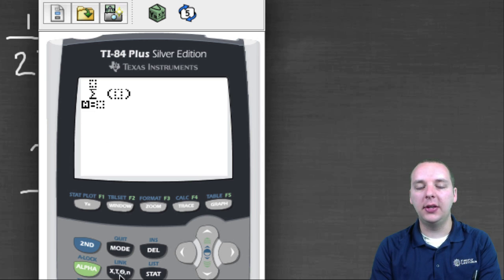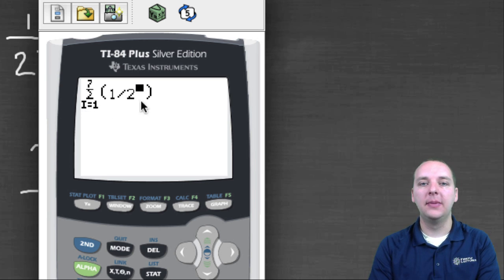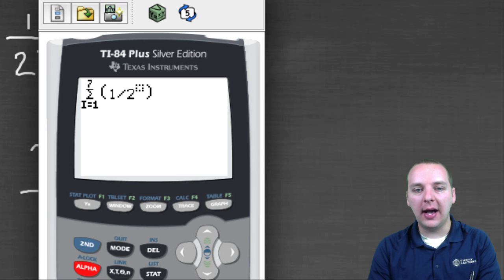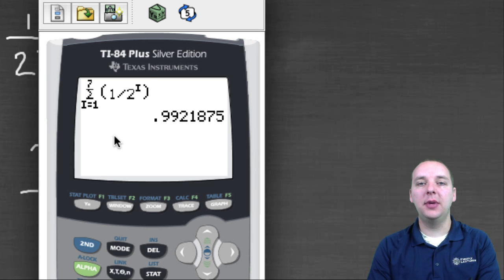So you see it wants a letter here. We'll just use I for example. You don't have to use an I, but we will. We'll say I equals one to seven, let's say we want to add up the first seven terms of one divided by two raised to the Ith power. So you have to go back and put in that letter, the same letter that you used before in your exponent. So we'll go alpha I, and you have to use alpha to make sure that you're getting the letter, not something else. So this is identical to what I had on my previous sheet.